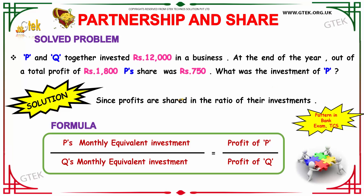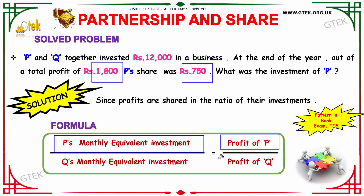Since profits are shared in the ratio of the investment, P and Q together invested Rs. 12,000. At the end of the year, out of the total profit of Rs. 1800, P's share was Rs. 750. So profit of P is Rs. 750, and Rs. 1800 minus Rs. 750 gives the profit of Q. If X is P's investment, then 12,000 minus X is Q's investment.